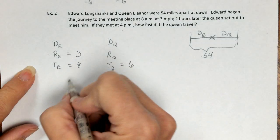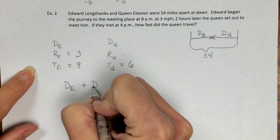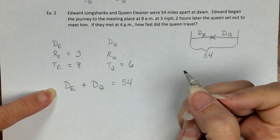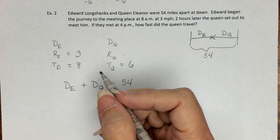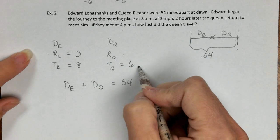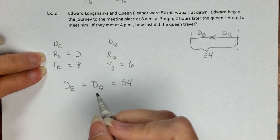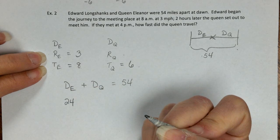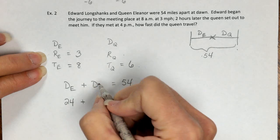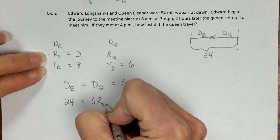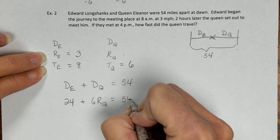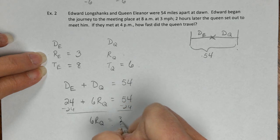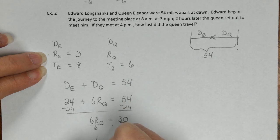So his distance plus her distance is 54. In my box for a problem set, I'm not writing this equation. This is just for you to be able to follow easily in your notes. I'm going to go straight to rate times time plus rate times time. 3 times—so 24. His distance is 24, that means her distance is 30. So 6RQ, because the Queen's rate times time, and then that total is 54. When we subtract 24, of course, we're getting 30 over there. 6 times rate of the Queen is 30, divided by the coefficient of the variable.